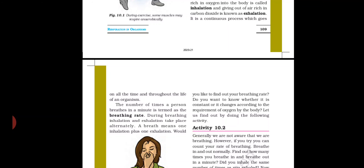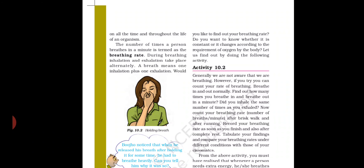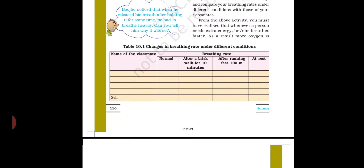Activity 10.2: you have to find your average breathing rate as well as your breathing rate when doing some activity. You have to maintain Table 10.1 — 'Changes in the breathing rate under different conditions.' First is normal condition. Write your classmates' names, then note each person's normal breathing rate in a minute. Then, after a brisk walk for 10 minutes — brisk walk means walking very fast — check your breathing rate again.